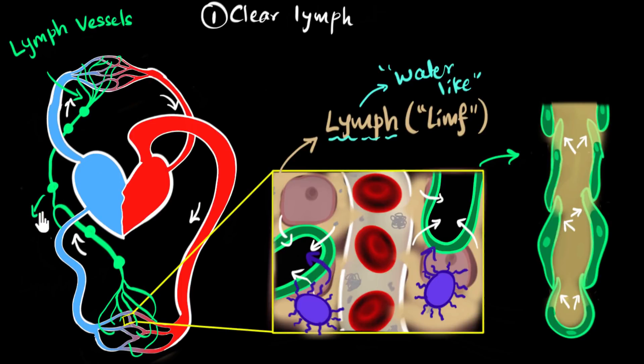These are called lymph nodes. And they have a lot of WBCs over there. WBCs are like police. So when the lymph enters into these nodes, if there are any unwanted stuff like bacteria, the WBCs are going to kill it. This will make sure that no unwanted stuff enters your bloodstream. It's pretty cool, right? And so you see these lymph vessels also help in killing unwanted stuff from your body. So they also help in immunity.